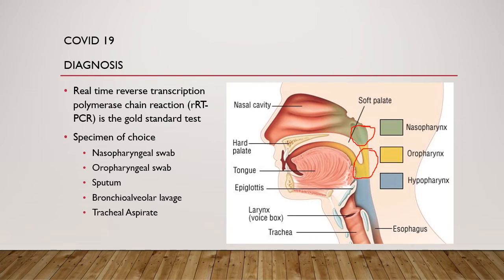Respiratory samples should be kept refrigerated at 4 to 8 degrees Celsius and sent to the laboratory, where they would be processed within 24 to 72 hours of collection. If samples cannot be sent within this period, freezing at minus 70 degrees Celsius is recommended. The virus can be detected in other samples like stool and blood, but these samples are not recommended for diagnosis. Samples should be collected by trained personnel using personal protective equipment.